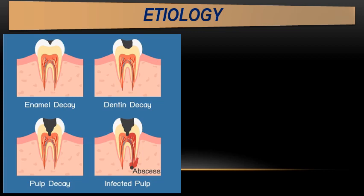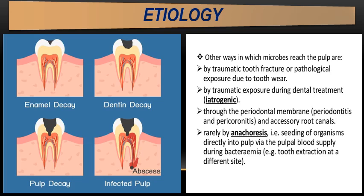It starts initially as enamel decay, which digs further into dentine, then reaches the pulp, leading to pulp exposure, pulp necrosis, and infection that goes beyond the apex of the tooth to form an abscess. There are other routes by which microbes can reach the pulp: traumatic tooth fracture or mandibular fracture, iatrogenic exposure of the pulp during dental treatment, via the periodontal membrane through periodontitis or pericoronitis — the endo-perio problem — and rarely anachoresis, meaning seeding of microorganisms directly into the pulp via the pulpal blood supply during bacteremia, which requires lowered host immunity.